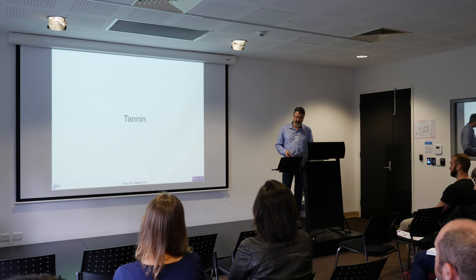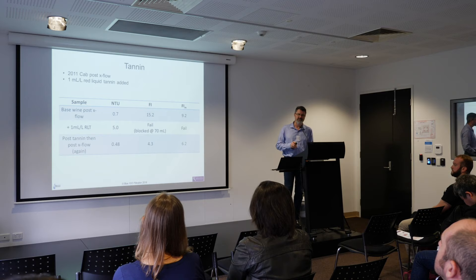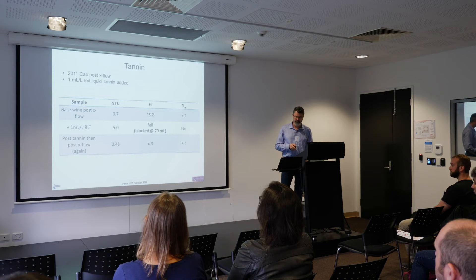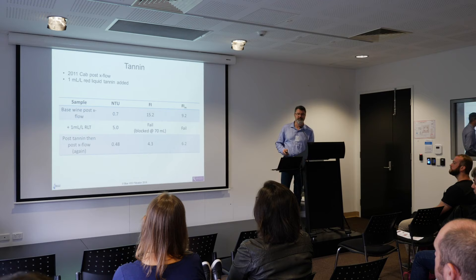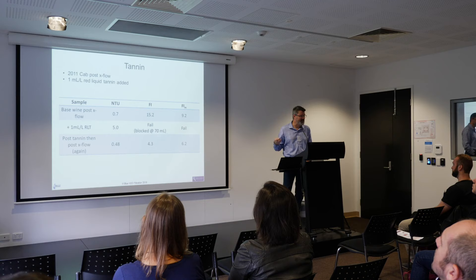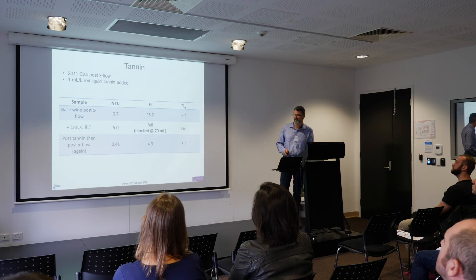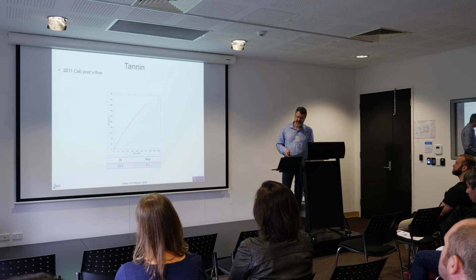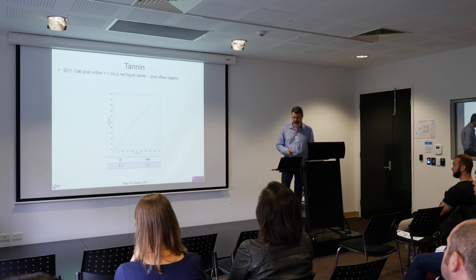Tannin is another big influence. In the wet 2011 vintage with a lot of Botrytis, lacase, and colour loss, a red liquid tannin was widely used. The base wine after crossflow was 0.7 NTU with filterability indexes of 15 and 9 — pretty good. Adding just 1 ml/L of red liquid tannin bumped it to 5 NTU, which fails filterability instantly. The solution was to put it back through the crossflow to remove the added material, getting back to a clean wine. Bench testing before making tank additions is a good idea to check the filterability impact.